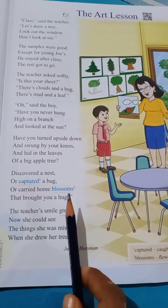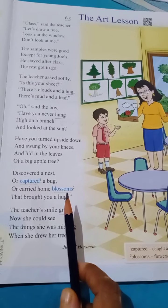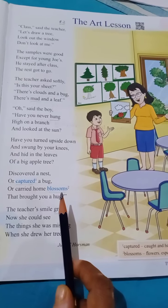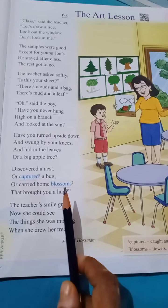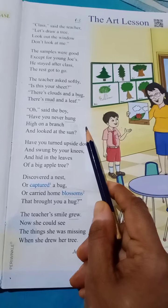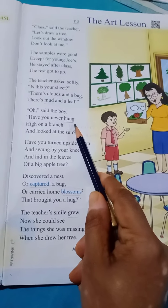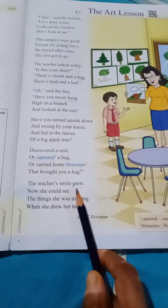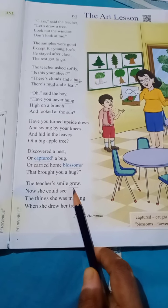Next word: 'blossoms.' Blossoms means flowers, especially on a tree or a bush. Next word: 'hung.' Hung means sway. And here, 'grieve' — grieve means expand or extend.